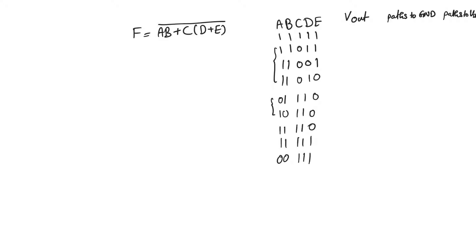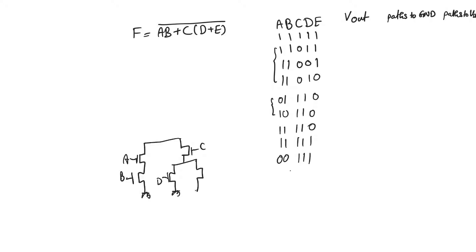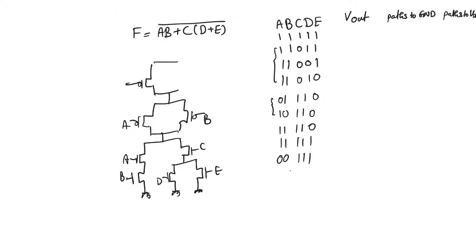This will be an exercise as well as the start of this problem. Looking at the expression of f-bar — AB + C(D+E) — implementing this in the pull-down network, we get a branch with AB and another branch with C, where D and E are in parallel with each other. When we implement the pull-up network, we have two blocks: one corresponding to A and B, and another where C appears in parallel with D and E, which are in series. Always make sure you have the same number of PMOS transistors in the pull-up network as NMOS transistors in the pull-down network.